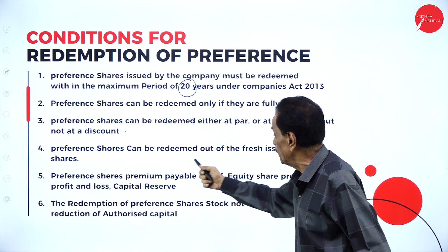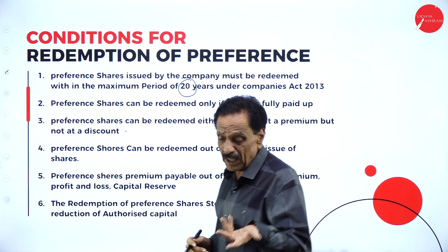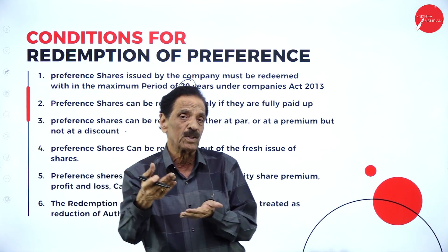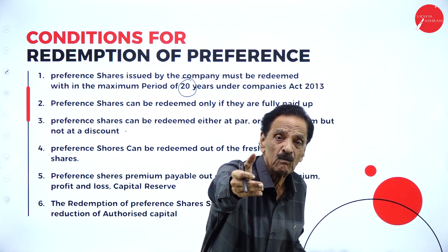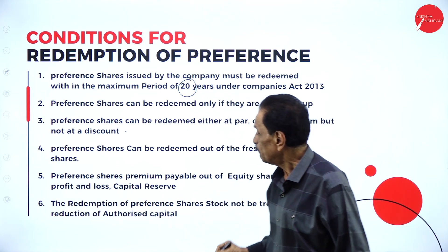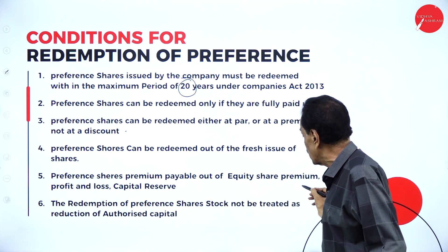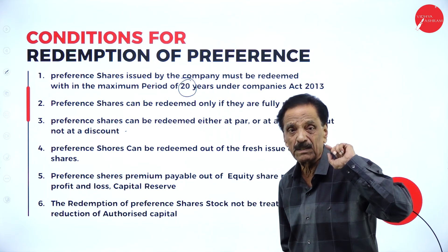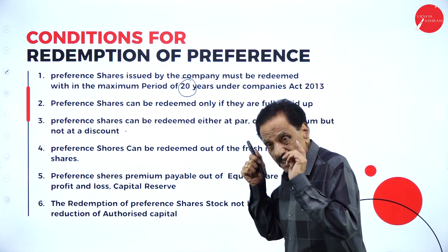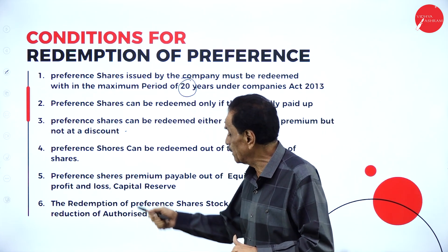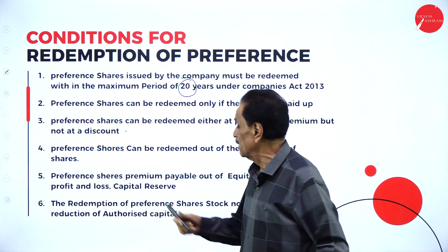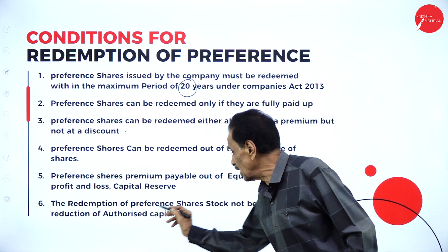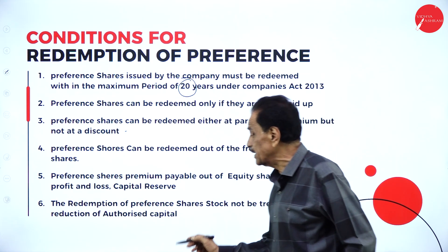Fourth condition: preference shares can be redeemed out of a fresh issue of shares. We can issue fresh equity shares for the sake of redemption. The preference share premium payable should be paid out of the equity share premium or from the profit and loss account if equity share premium is not available. We can also utilize capital reserve. Importantly, redemption of preference shares should not be treated as a reduction in authorized capital.